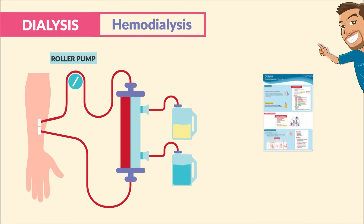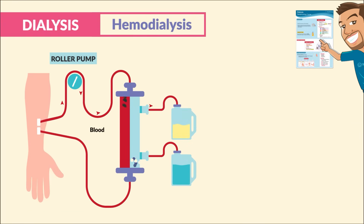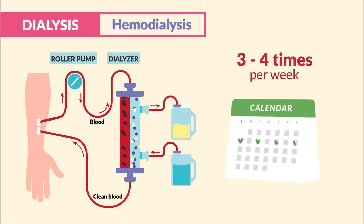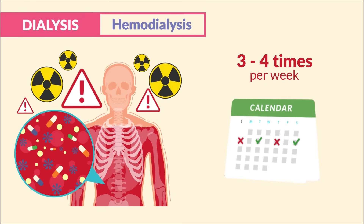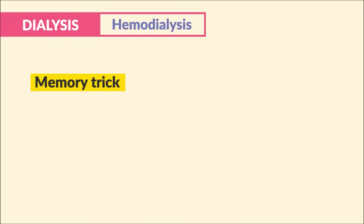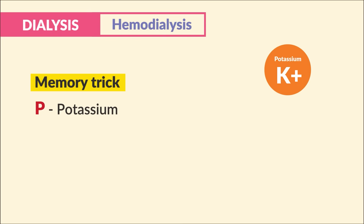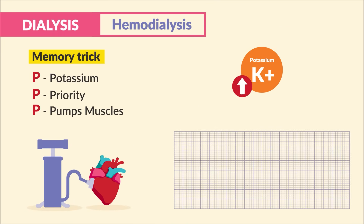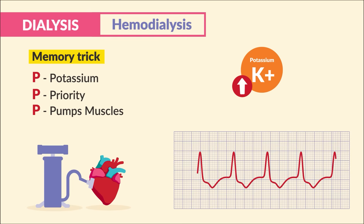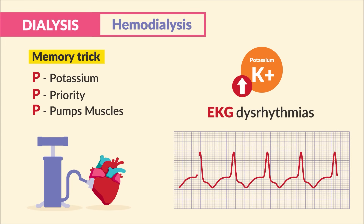For hemodialysis, a shunt is placed into the arm where blood is taken and washed in the dialysis machine, around three to four times per week. If a session is missed, then we have a huge risk for excess electrolytes and waste in the blood. The one to know for exams and the NCLEX — write it down — is potassium. Potassium is priority, since it pumps the heart muscles. In high potassium, we have high pumps in the heart, leading to ECG dysrhythmias.